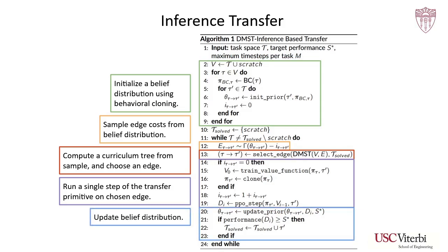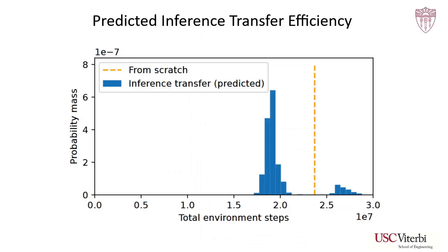Running a full evaluation of this algorithm would be extremely computationally intensive. However, we can simulate its performance by using a set of prior runs which were used to compute the same transfer cost matrix. This plot shows the predicted efficiency of inference transfer relative to training from scratch. The gold dashed line shows the number of environment steps used to train each task in MT-10 from scratch to 90% success. The blue bars show the result of running inference transfer 1000 times on data from a fixed set of runs to reach the same level of success. Note that in most cases, inference transfer significantly improves sample efficiency, reaching near the best possible sample efficiency predicted by the curriculum frontier.